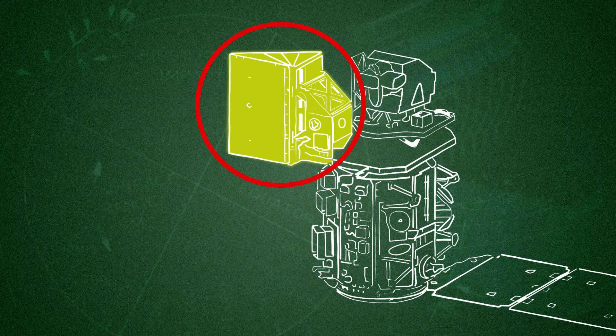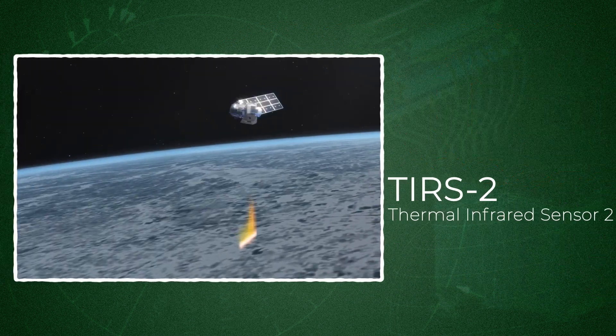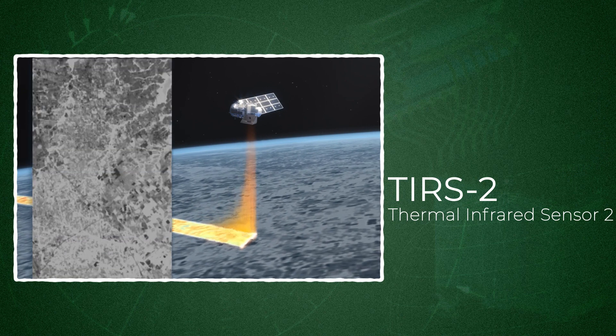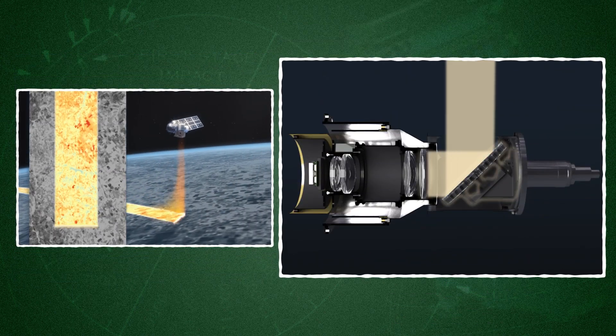The second instrument aboard Landsat 9, called TIERS-2, collects thermal infrared wavelengths, or temperature signatures emitted by the Earth itself.